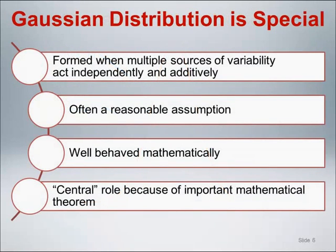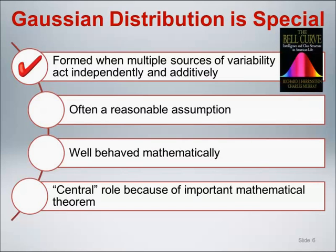The Gaussian distribution is special for a number of reasons. This distribution is naturally formed when multiple sources of variability act independently and additively. This is actually the motivation for and message in the title of the Bell Curve book, that IQ scores are normally distributed because a person's intelligence is the sum of many small random variations in genetic and environmental factors.